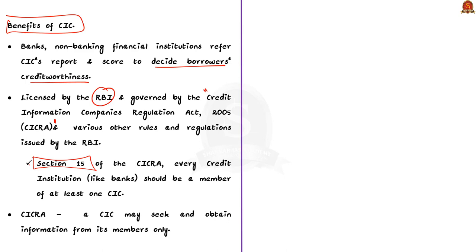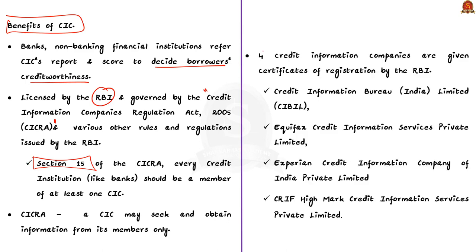At present, four CICs have been given a certificate of registration by the RBI. They are Credit Information Bureau India Limited CIBIL, Equifax Credit Information Services Private Limited, Experian Credit Information Company of India Private Limited, and CRIF High Mark Credit Information Services Private Limited. With these basics, let us now see the question.